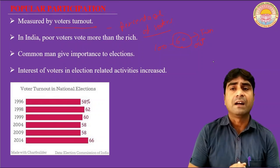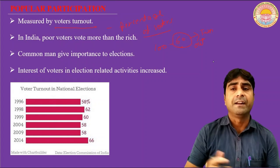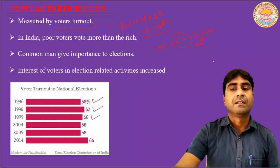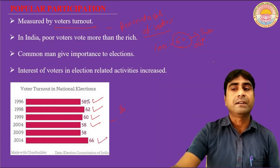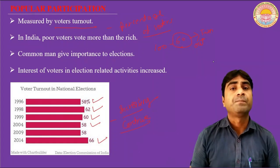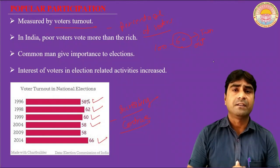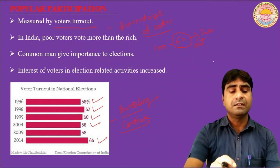You can see on the screen the voter turnout figures in national elections of India. In 1996 it was 58%, in 1998 it was 62%, then 60%, 58%, and in 2014 it was 64%. So we find that the voting turnout is continuously increasing. The voter turnout in India continues to increase.